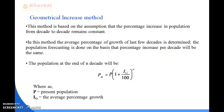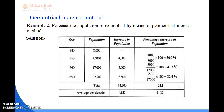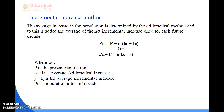We have completed the problems of the geometrical increasing method. Next we will be doing the incremental increasing method. In this method, the average increase in population is determined by the arithmetic method, and the average of the net incremental increase is added once for each future decade. In this method, the rate of growth is not constant — the population may decrease or increase.